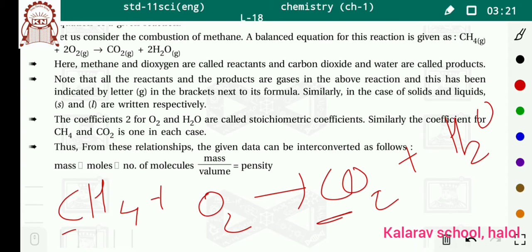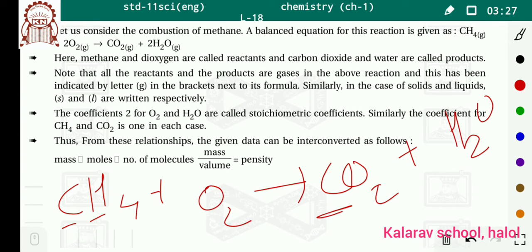Next, hum hydrogen lete hain. In the reactant side, number of hydrogen atoms kitnay hain? Four hain. Aur in the product side, only two hydrogen hain. Toh hume dono sides ko same karna padega. Reactant side mein four hydrogen hain; agar H2O ko two se multiply karen, toh two times two — four ho jayega. Matlab ki, dono sides mein hydrogen atoms balance ho gaye.